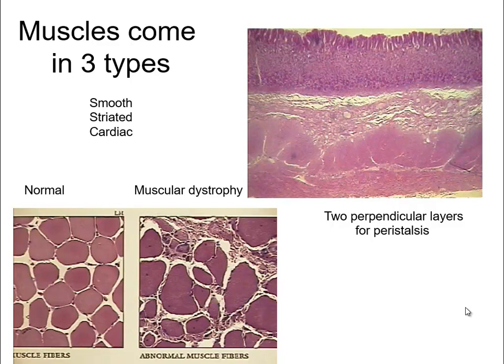Muscles work to contract, but in the case of peristalsis — like when you're swallowing — you actually have two layers perpendicular to each other. As you swallow, one layer pushes downward and one pushes around, so it's a rhythm of squeezing and then pushing down. Like squeezing a tube of toothpaste, it would squirt both directions — but when swallowing you only want it to go down, so you need a downward pushing motion to keep things going in the right direction.